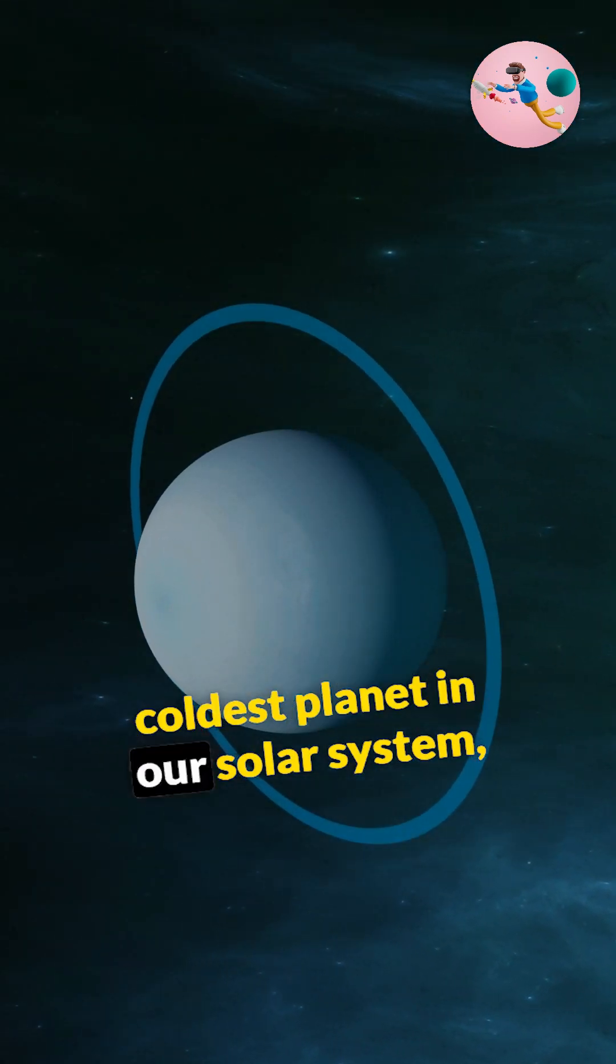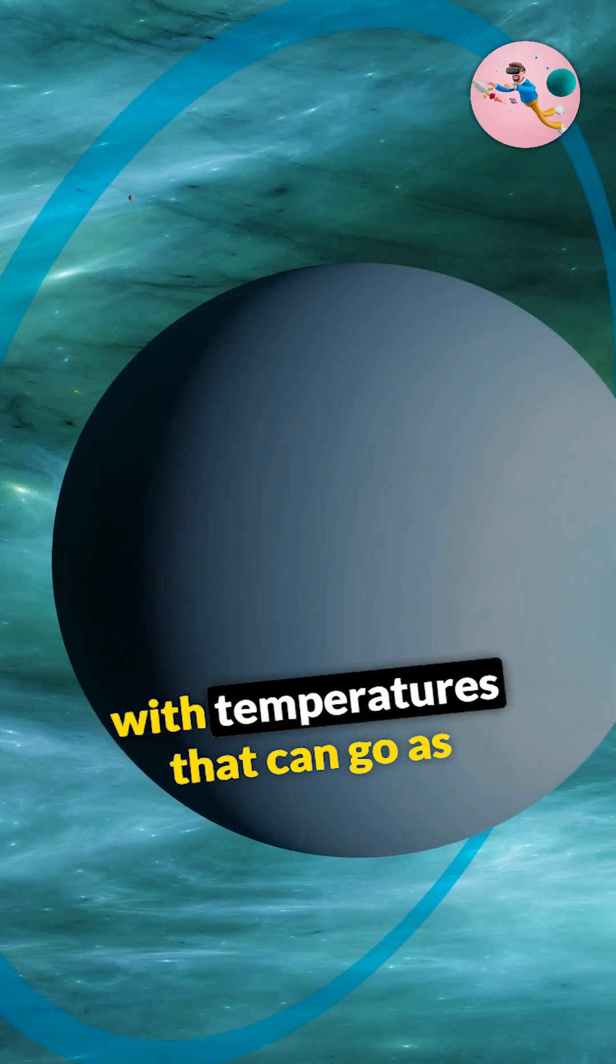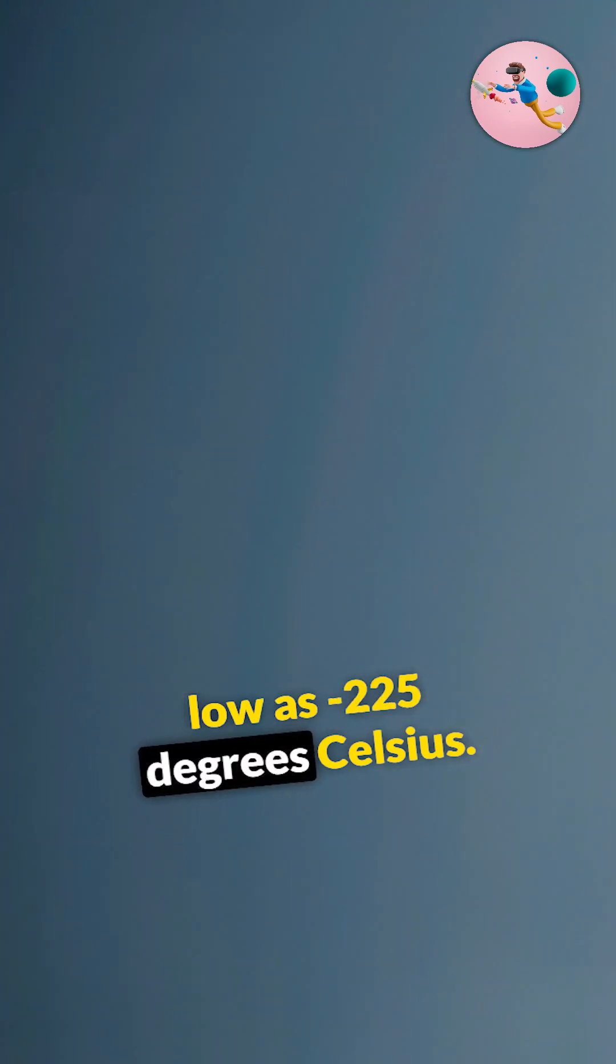Do you know that Uranus is the coldest planet in our solar system, with temperatures that can go as low as minus 225 degrees Celsius.